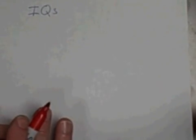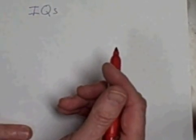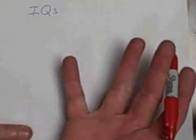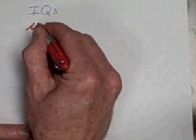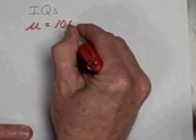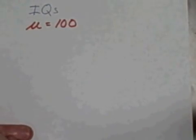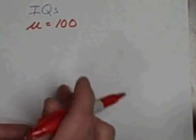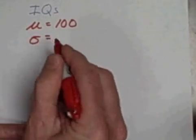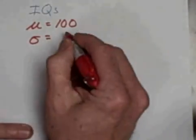By definition, the mean, the average IQ of adults, and let's say American adults, mu is 100. 100 IQ is the mean. The standard deviation for IQs is 15.